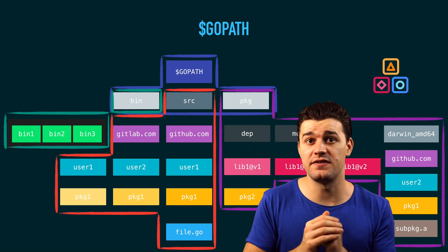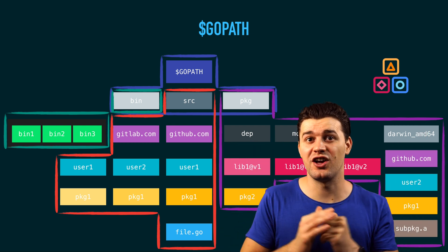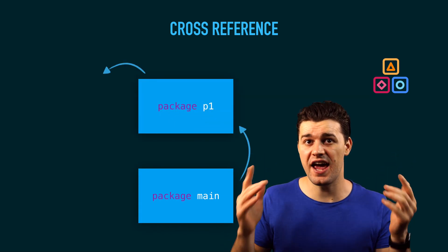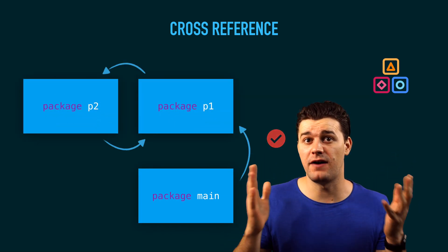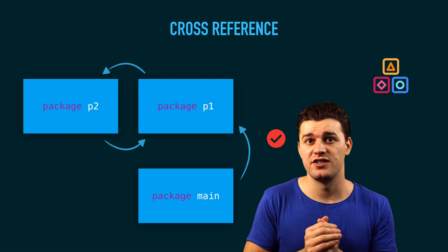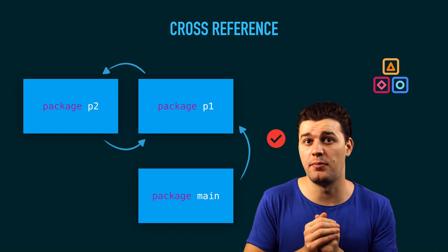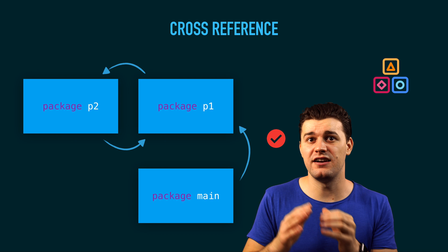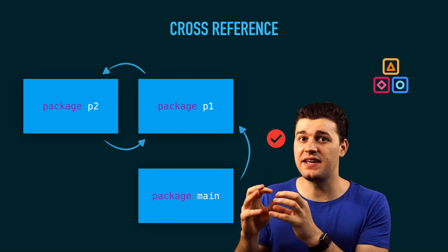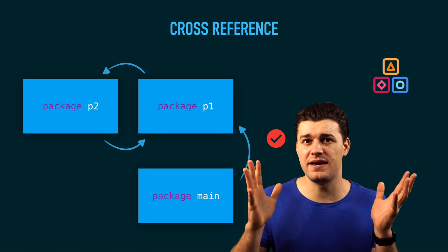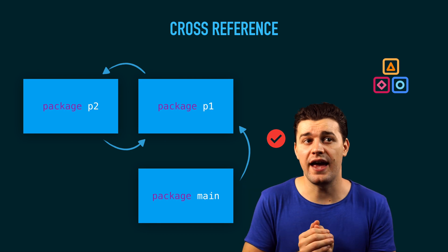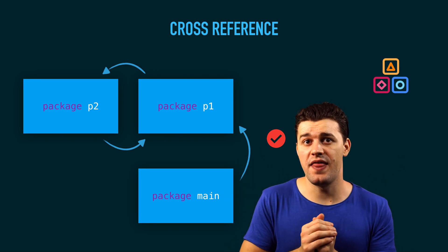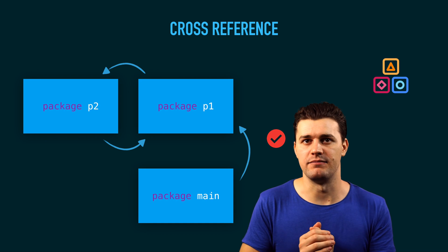Speaking of packages and imports, there is such a notion in Go as cross-reference. Cross-reference means when package A imports package B and vice versa. Go doesn't allow that, as opposed to other languages. If package A imports package B, package B cannot import package A — that would cause an import loop, an infinite loop. Go doesn't allow that and it will fail at compile time.